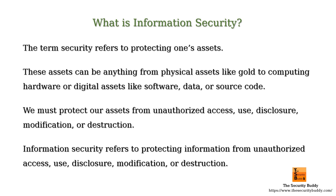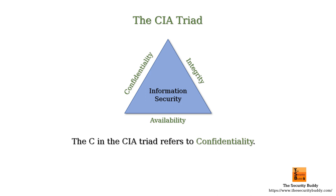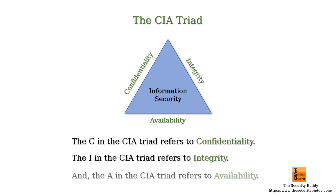When we need to discuss information security, we think about a model called the CIA triad. The C refers to confidentiality, the I refers to integrity, and the A refers to availability. These three — confidentiality, integrity, and availability — are the primary concepts in information security.